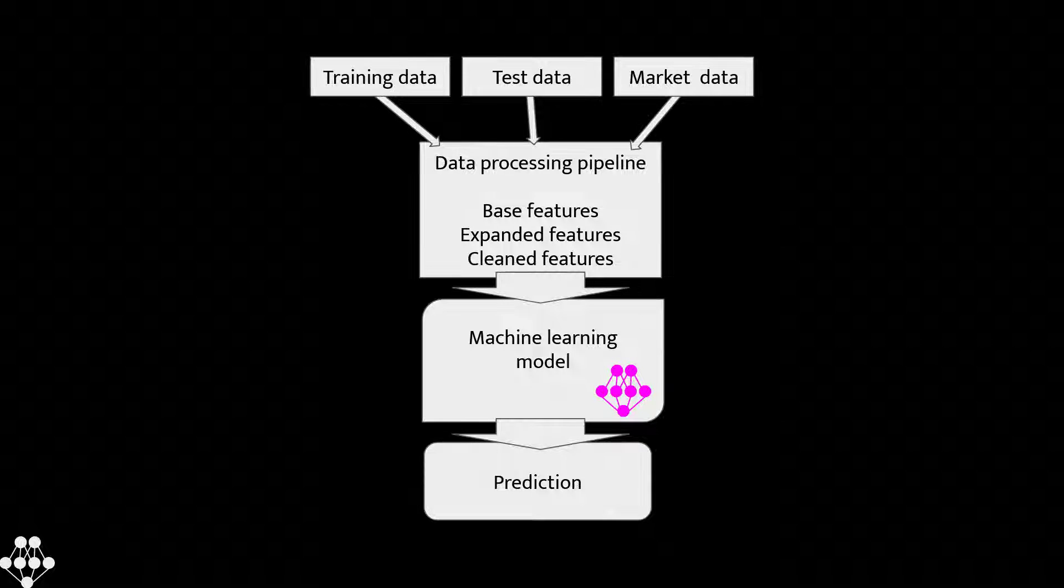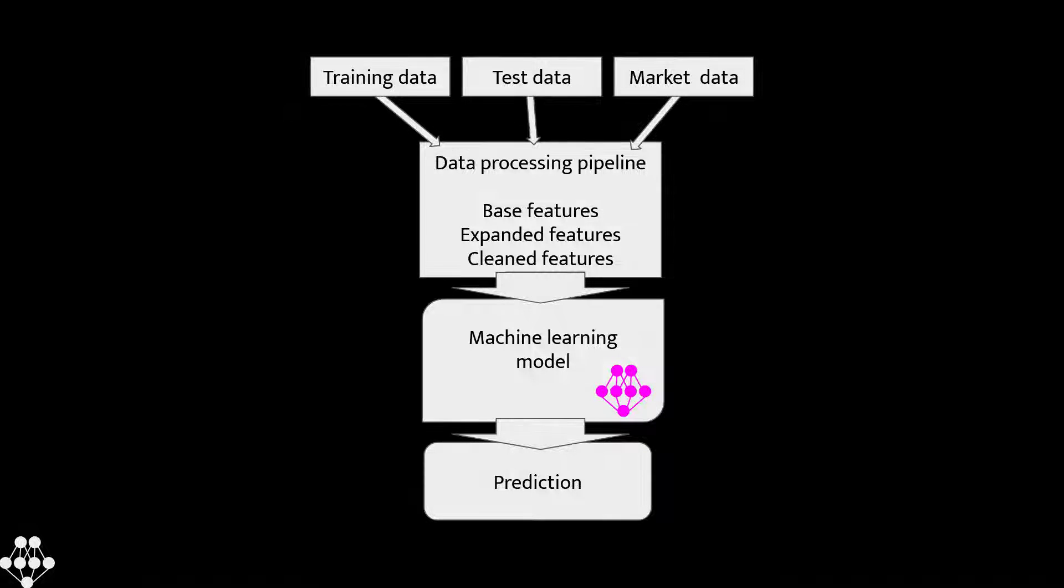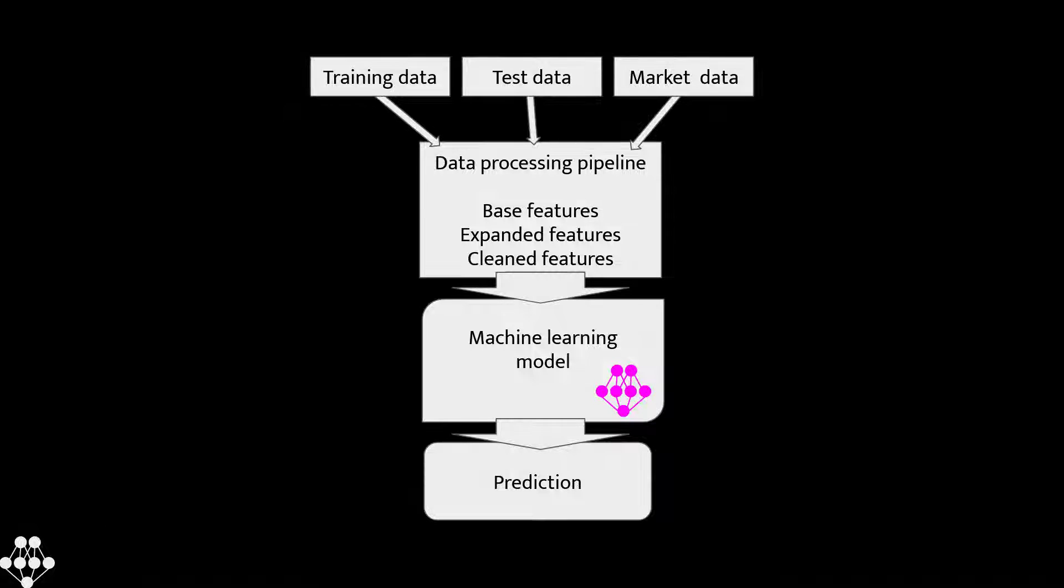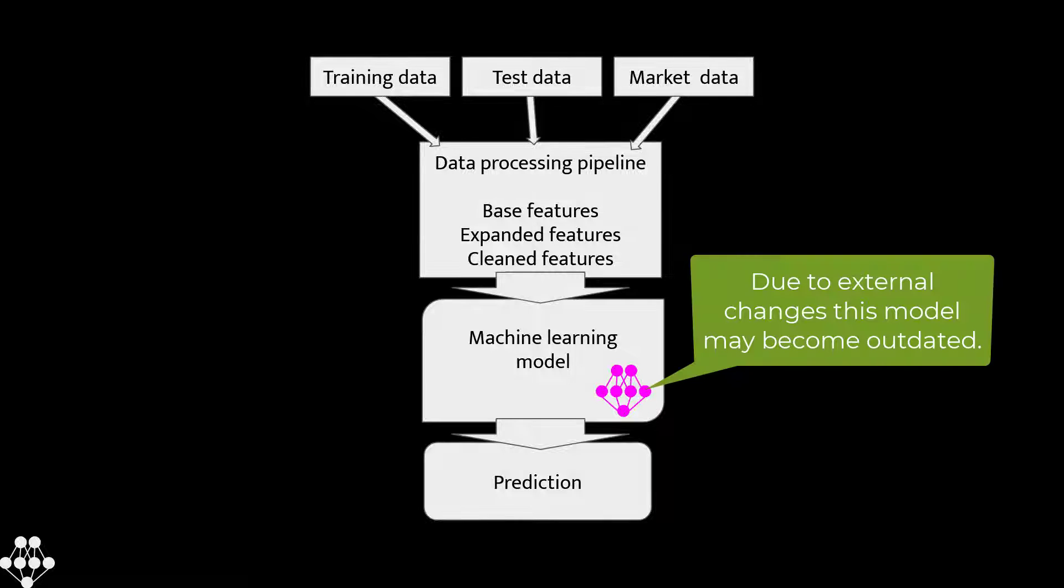However, the market is constantly changing. Economic conditions, market sentiment and other factors can all affect the price of currencies. This means that the trader's machine learning model may become outdated over time and can produce false signals based on obsolete data.